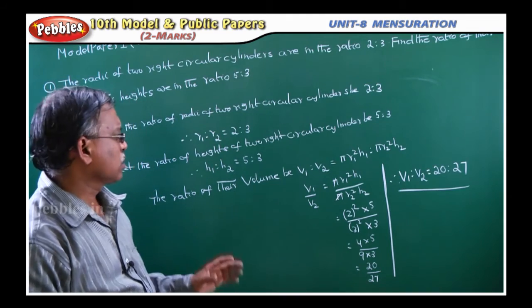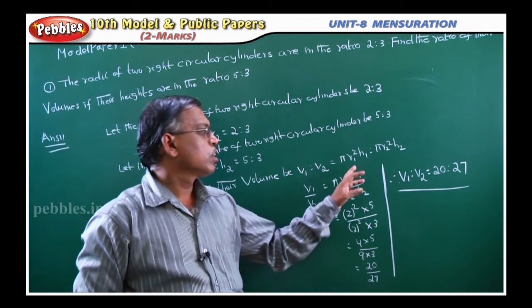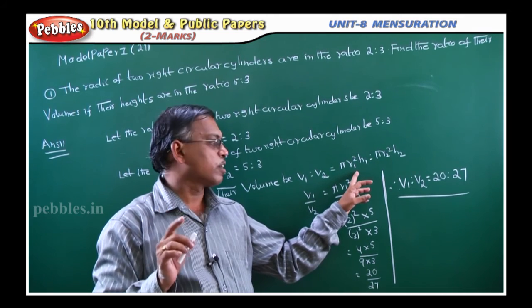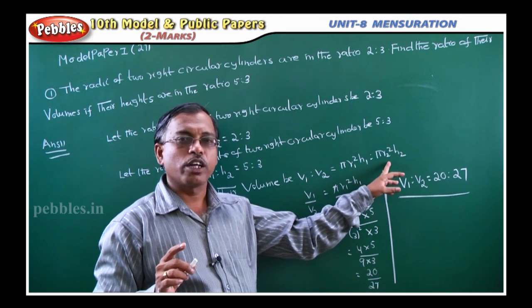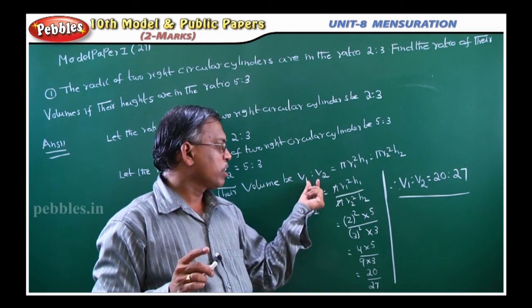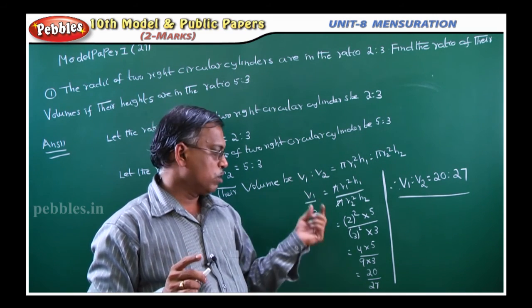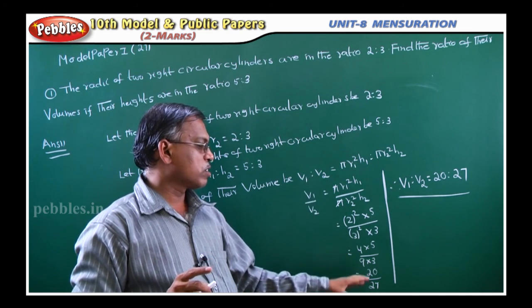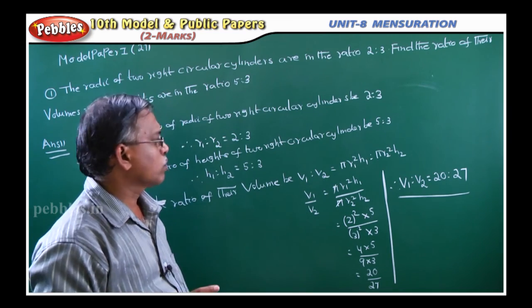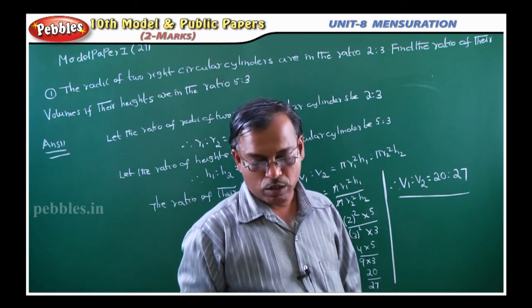Very simple. Just the only thing is you have to know the formula for volume of the right circular cylinder. In that, r1 r2 ratio given, h1 h2 ratio given, just apply the formula v1 is to v2. Ratio means division form. Then all the values given, just substitute then you will get the answer. We will see the next problem.